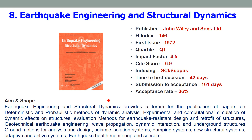Eighth is Earthquake Engineering and Structural Dynamics, published by John Wiley and Sons Limited, with an H-index of 146. It is one of the oldest journals — the first issue was published in 1972. It is a Quartile 1 journal, placing it among the top 25% in civil engineering. The recent impact factor is 4.5 and the site score is 6.9. It is an SCI and Scopus indexed journal. You will get the first decision within 42 days, and the total span from submission to acceptance is about 161 days — approximately 5.5 to 6 months. The acceptance rate is 36%.